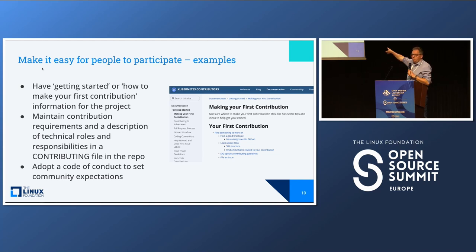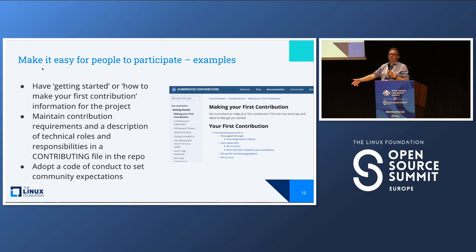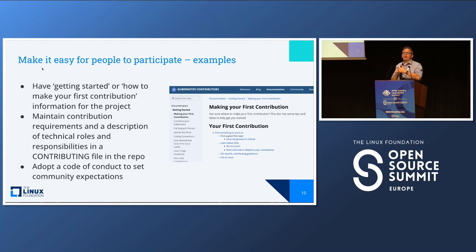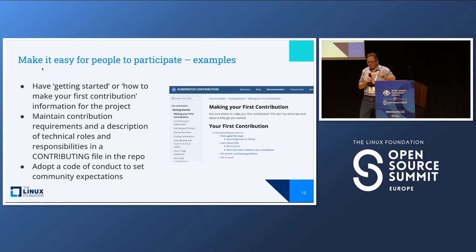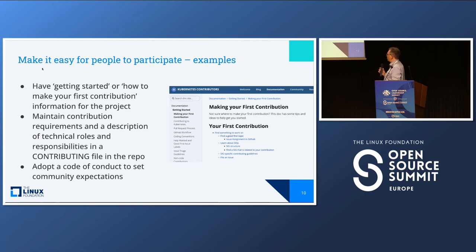Here we have Kubernetes documentation — 'Making Your First Contribution.' So you go to CNCF, go to Kubernetes, and if you're interested in contributing, there's your roadmap — exactly how to do it. Having a 'Getting Started' or 'How to Make Your First Contribution' document can be very useful. Some projects have contribution requirements and special technical roles — document those so people understand what it means to participate. If you have a hierarchical structure with layers of maintainers, document it so someone knows where to start when making a contribution to a particular repository.